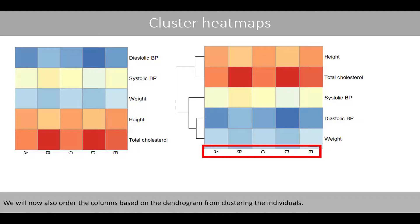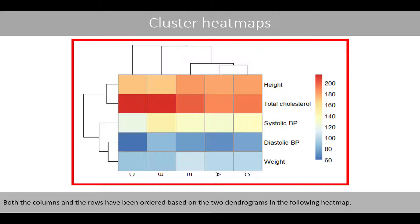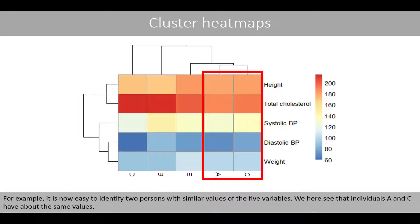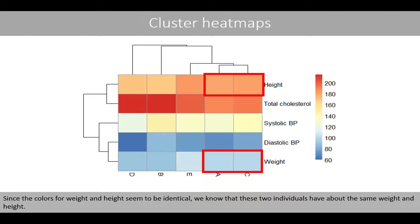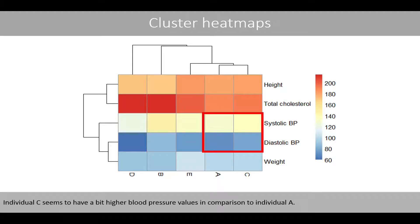We will now also order the columns based on the dendrogram for clustering the individuals. Both the columns and the rows have been ordered based on the two dendrograms in the following heatmap. For example, it is now easy to identify two persons with similar values of the five variables. We see that individuals A and C have about the same values, since the colors for weight and height seem to be identical. Individual C seems to have a bit higher blood pressure values in comparison to individual A.